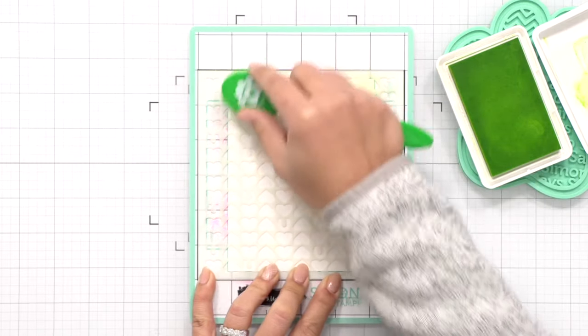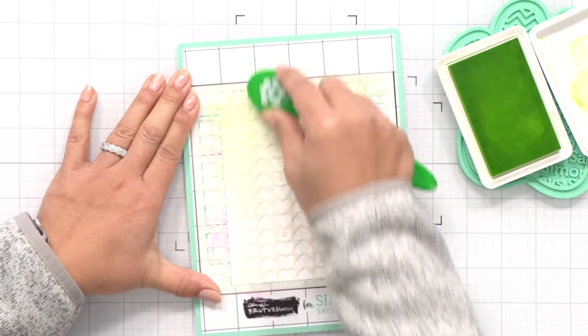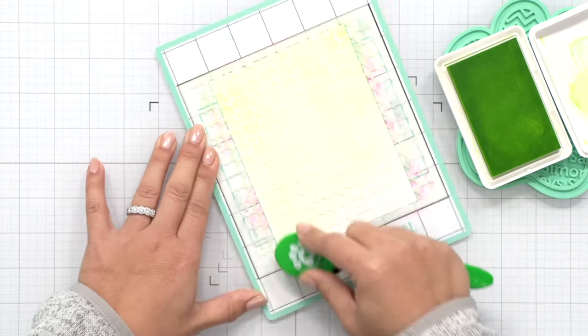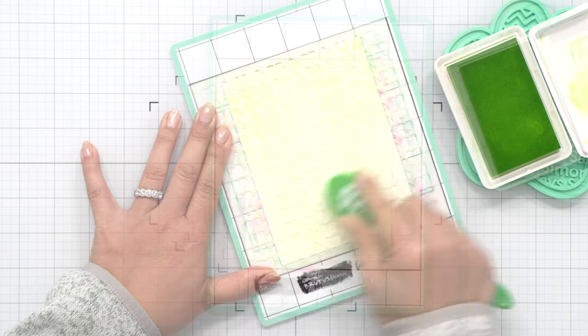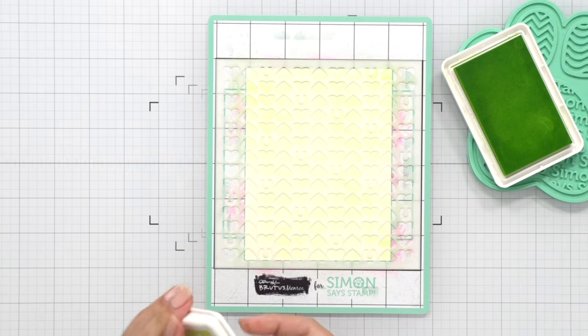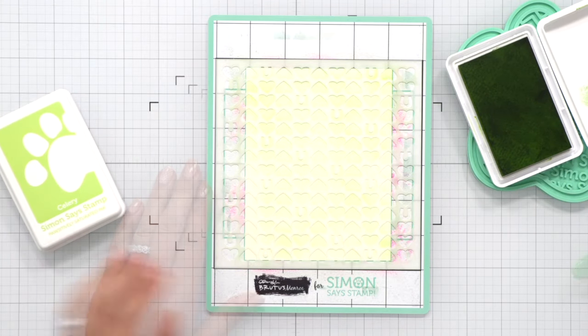I'm using two colors in green. I'm doing a celery color which is this first light color and I'm doing an even blend all the way down the panel and then I'll go in with the Pearfection ink which is the darker color and blend from the bottom up so I have a nice gradient of colors from the light to the dark.